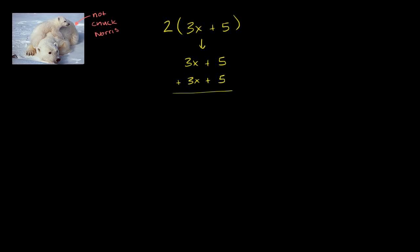Well, this is the same thing as, if we just look at it right over here, we have now two 3x's, so we could write it as 2 times 3x, plus we have two 5s, so plus 2 times 5.